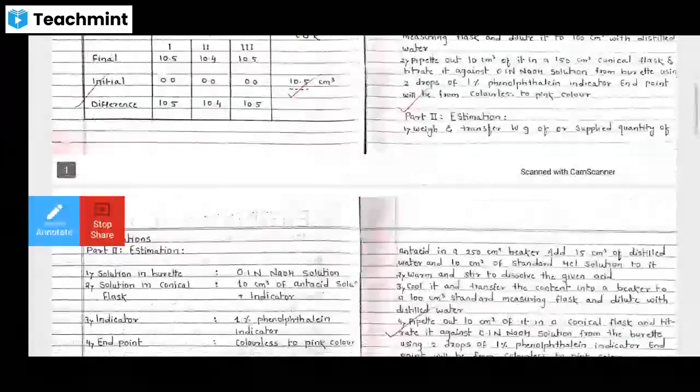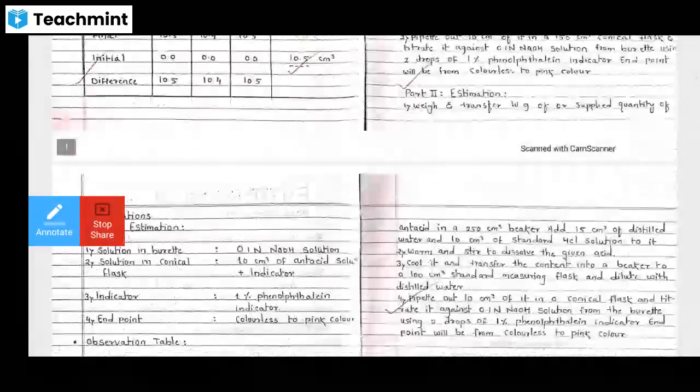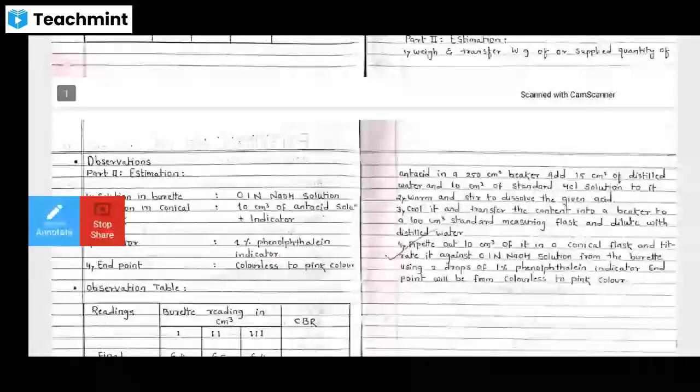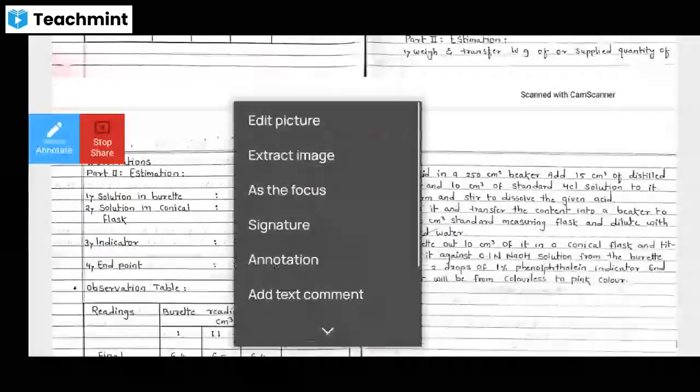End point will be colorless to pink color. This is the standardization procedure. Next, weigh and transfer the given grams of antacid in a 250 cm³ beaker. Add 50 cm³ of distilled water and 10 cm³ of standard HCl solution to it. Warm and stir to dissolve, cool it, and transfer the content into a 100 cm³ standard measuring flask.